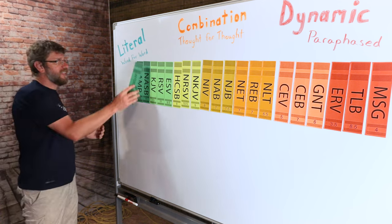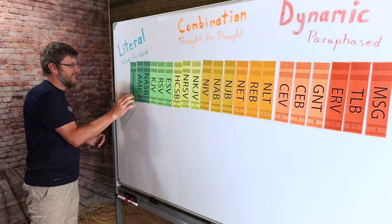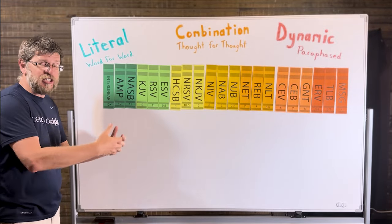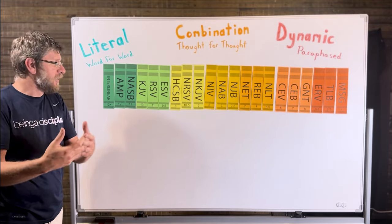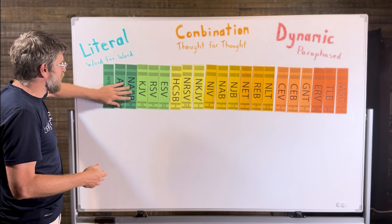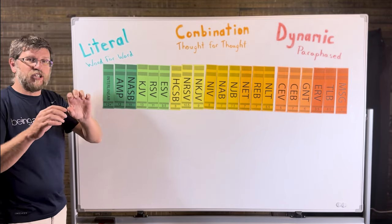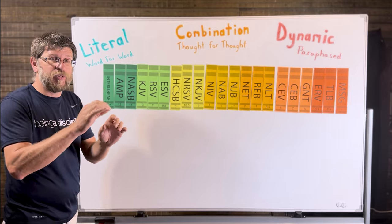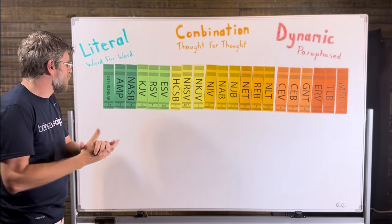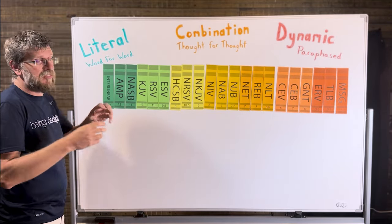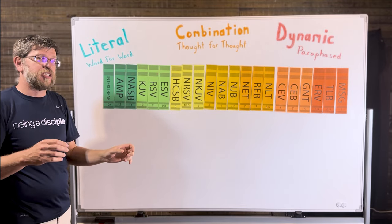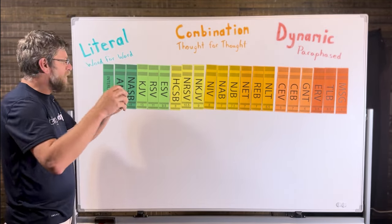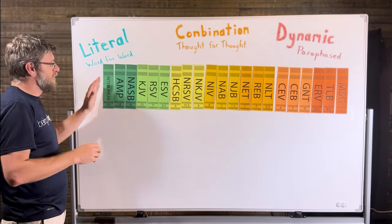And clear on this end is interlinear Bibles. An interlinear Bible is literally the ancient manuscripts, Hebrew, Greek. And on it, it'll have a translation of the direct word underneath it. It'll tie a number to it that ties into Strong's Concordances. But it also will have that English translation on the side. It will have another English translation. So you can look at it. You can see the original word and how it's being translated. And it's a great one too.